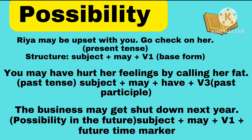Next example: 'You may have hurt her feelings by calling her that.' Here, the word 'may' is used to express possibilities, not certainty. It's just possibilities. This is in past tense, and the structure is: subject + may + have + V3, where V3 means the past participle, the third form of the verb.